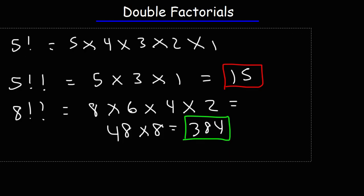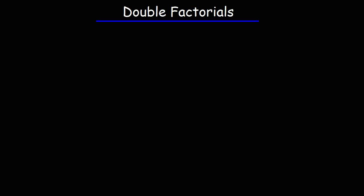Now, you need to understand something. These two expressions are not equivalent. n double factorial is not the same as n factorial factorial. On the left, this is a double factorial. On the right, that's what is known as an iterated factorial.